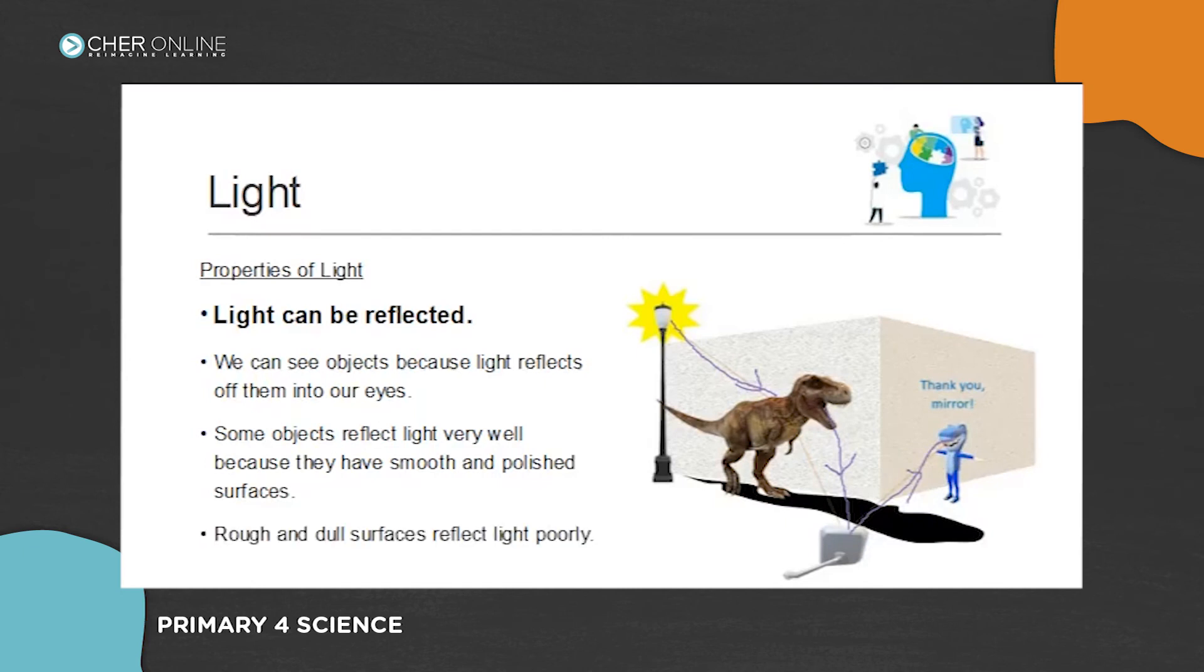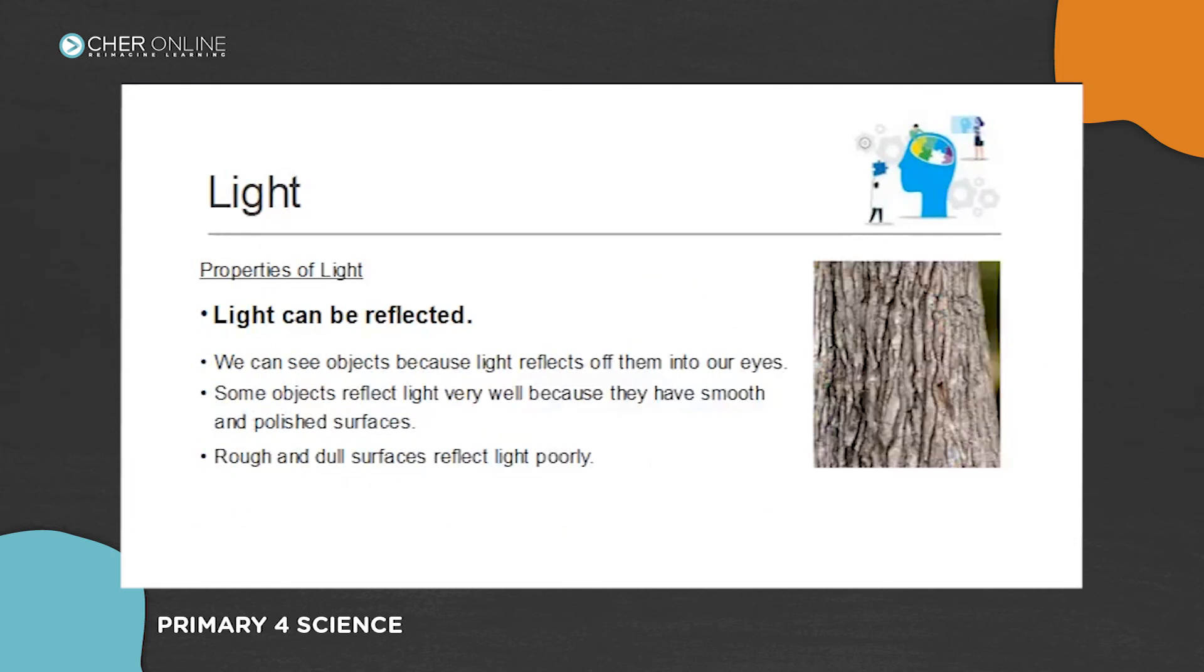Rough and dull surfaces reflect light poorly. So that's why you cannot see your reflection. Light can be reflected. We can see objects because light reflects off them into our eyes. Some objects reflect light very well because they have smooth and polished surfaces. But this tree bark here has very rough and dull surface, so it reflects light very poorly. They absorb more light than shiny objects. Light that falls on the rough surface is also scattered in many different directions.